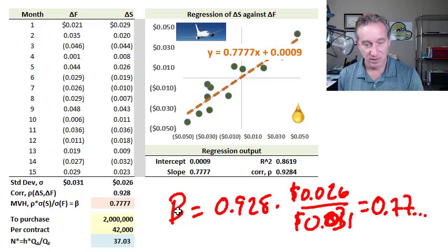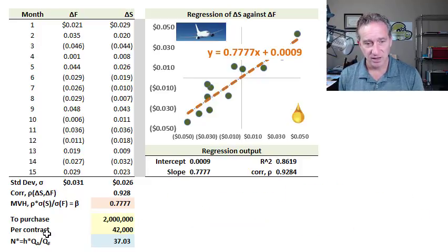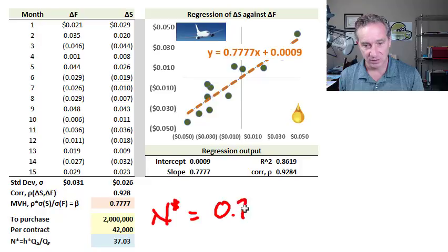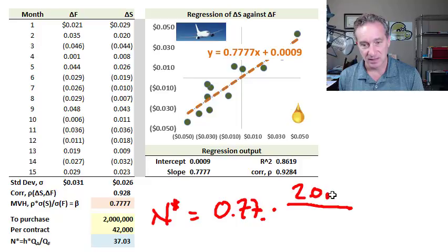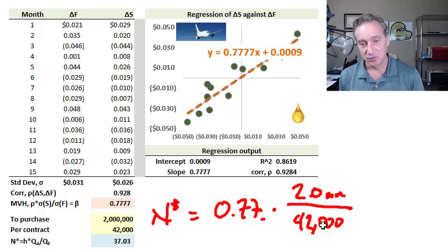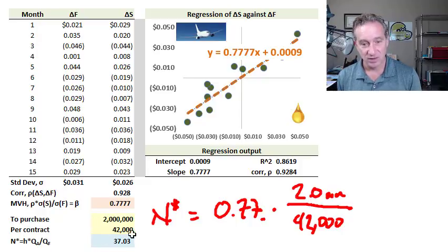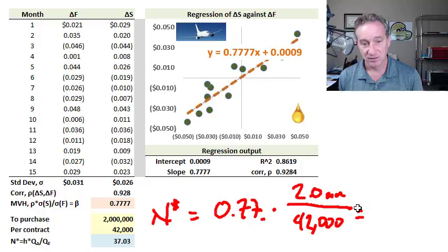How do we use that? The final step is to plug it into the formula: the optimum number of contracts equals the hedge ratio — our 0.7 repeating — multiplied by the quantity QA, the airline's exposure in gallons, divided by the size of the futures contract. In this case, 42,000 gallons is the size specification of the heating oil futures contract on the CME. This gives us an optimal hedge of just about 37 contracts.